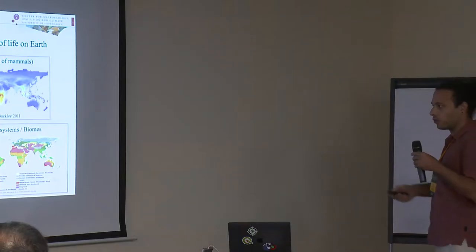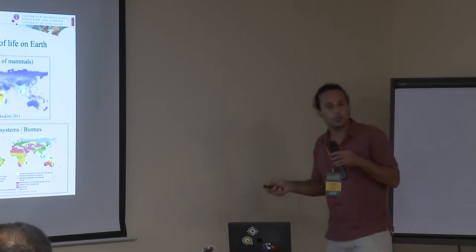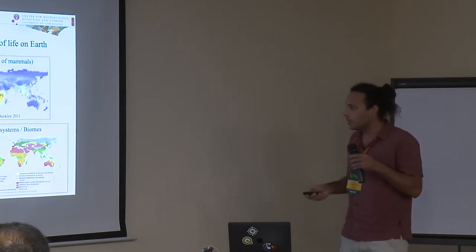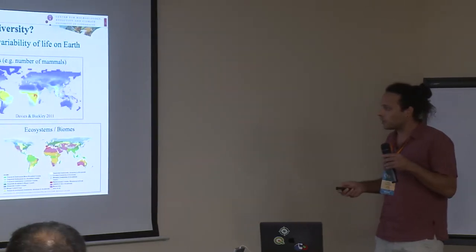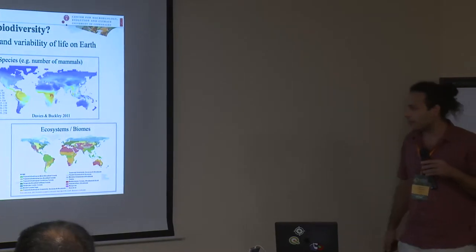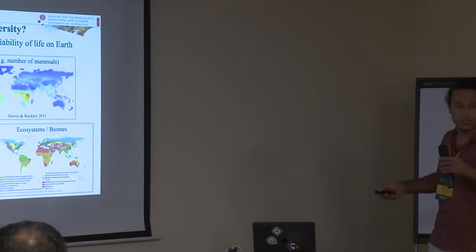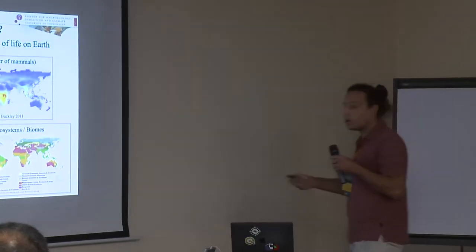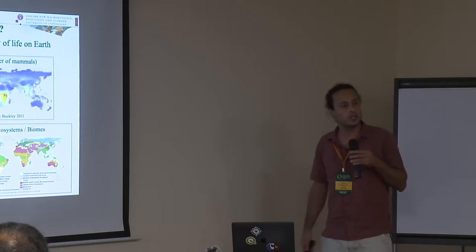The higher level of biodiversity is ecosystems or biomes — this shows the distribution of biomes on Earth, from savannas to tropical rainforests to temperate forests. So we have three different levels, starting from genes up to biomes. What's common here is the use of maps in biodiversity research.